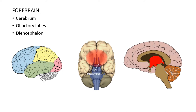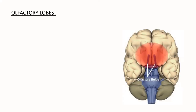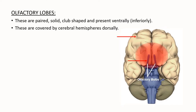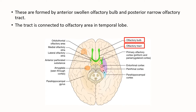As we have discussed about the cerebrum in the previous video, let's start with olfactory lobes. Olfactory lobes are paired, solid, club-shaped, and present ventrally, which means they can be seen through an inferior view. These lobes are covered by cerebral hemispheres dorsally. The olfactory lobes are formed by an anterior swollen olfactory bulb and a posterior narrow olfactory tract. This tract is connected to the olfactory area in the temporal lobe.